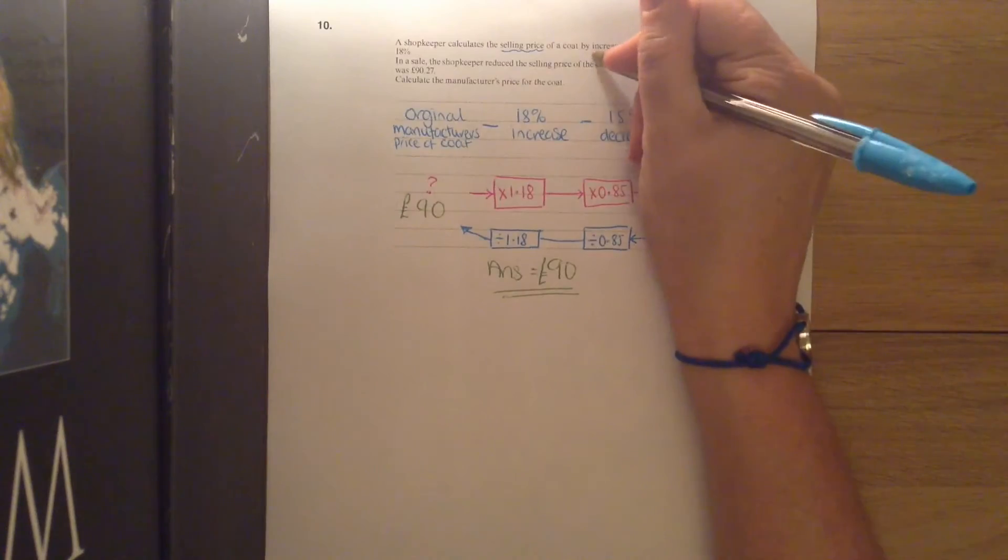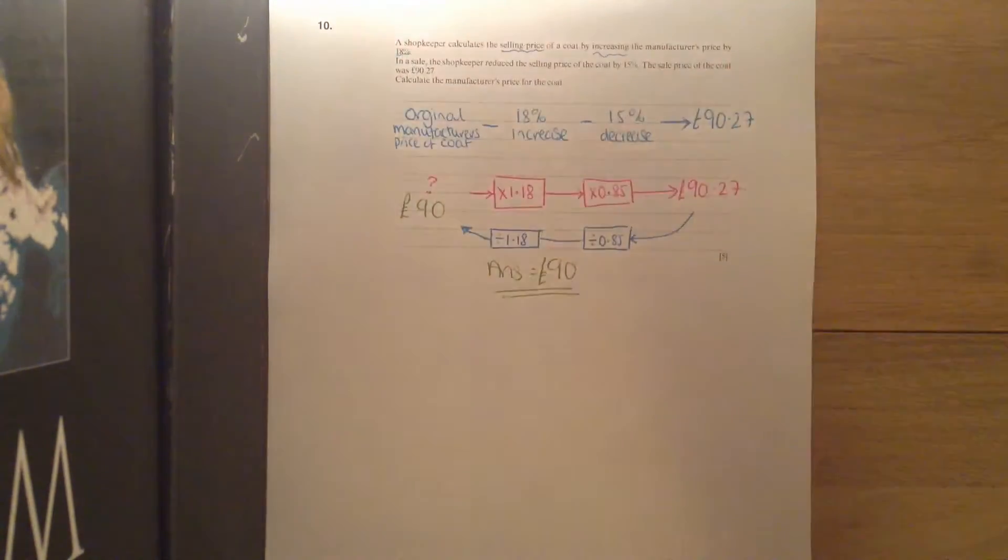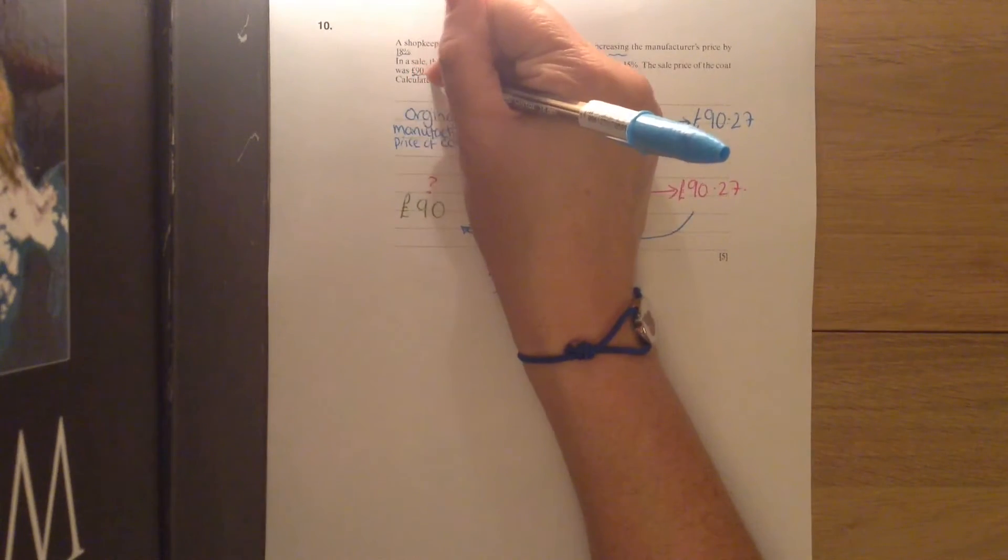And they increase it first of all by 18%. In the sale they then reduce the selling price by 15%, and we found out at that point the cost was £90.27.